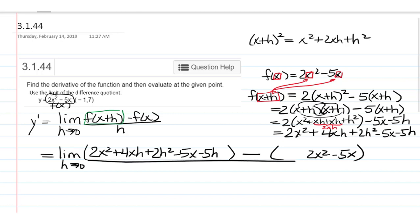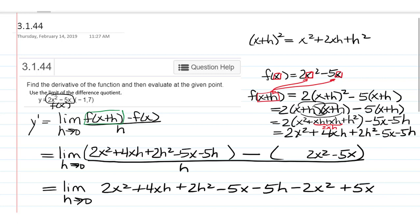Minus 2x squared minus 5x. Make sure to put it in parentheses because you're subtracting the whole expression, which changes the signs. So, we get the limit as h goes to 0 of 2x squared plus 4xh plus 2h squared minus 5x minus 5h minus 2x squared plus 5x all over h.